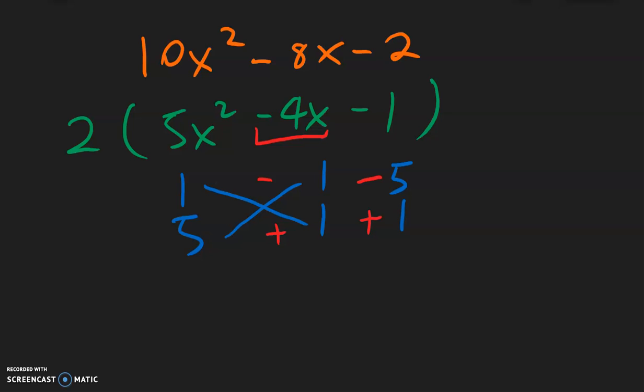Copy the signs over and double check. A negative 1 multiplied with a positive 1 is a negative 1, so that works. So the factors are going to be x minus 1 and 5x plus 1, and then we just need to remember to copy down this 2 in the front.